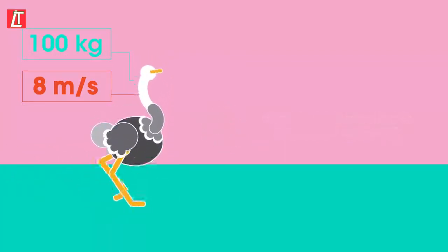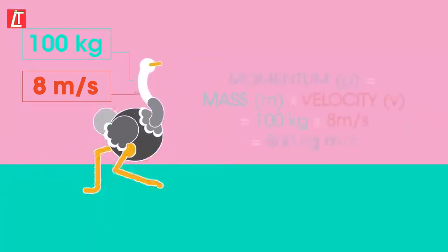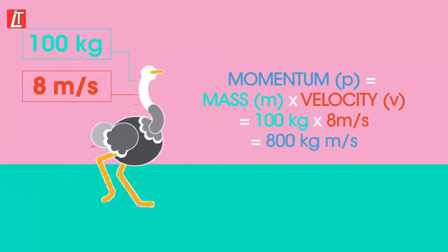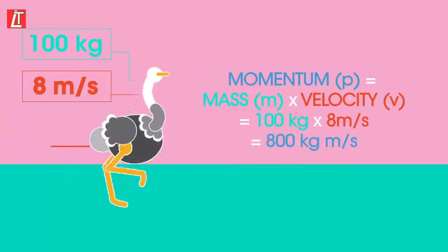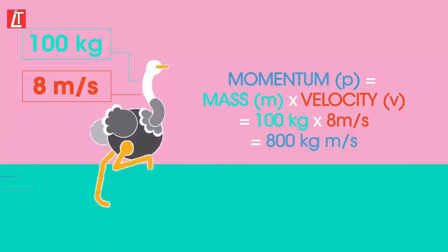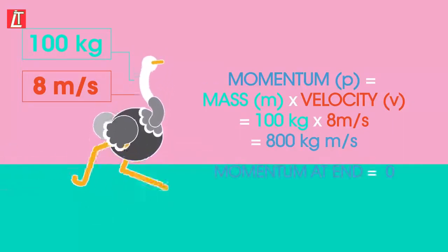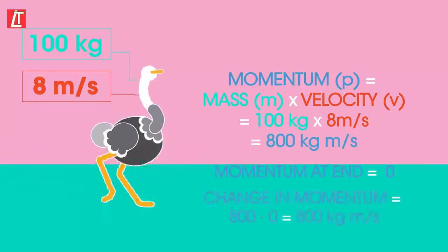First we need to calculate the change in momentum. Momentum at start equals mass m times velocity v, which equals 100 kilograms times 8 meters per second, which equals 800 kilogram meters per second. Momentum at end equals zero. Change in momentum equals 800 minus zero, which equals 800 kilogram meters per second.